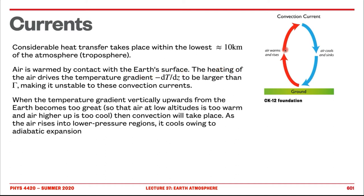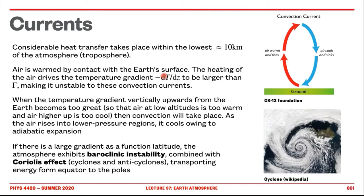This can also happen vertically. These gradients of temperature and changes in pressure, combined with the Coriolis effect — which is related to the fact that the Earth is rotating — justify the existence of cyclones and anti-cyclones. They can transport energy from the equator to the poles, very much related to the Coriolis effect. A cyclone rotates one direction and an anti-cyclone rotates the other. This is all related to how heat and energy is being exchanged through the atmosphere.